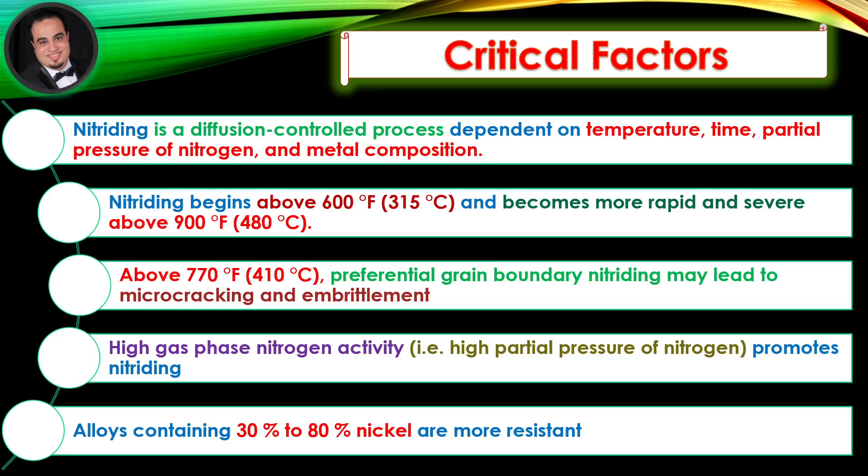Nitriding begins above 600°F and becomes more rapid and severe above 900°F. Above 770°F, preferential grain boundary nitriding may lead to micro-cracking and embrittlement.